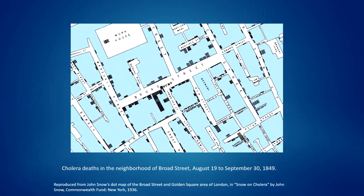A classic example of place-based descriptive epidemiology is John Snow's map of a cholera outbreak in London in 1849. Each horizontal black line on the map represents a case of cholera, enabling him to identify the Broad Street pump as the potential source of the outbreak. At a time when it wasn't clear what caused cholera, Snow used this map to demonstrate that people using that particular pump — which drew water from a contaminated part of the Thames River — were more likely to have cholera.